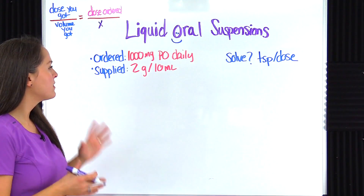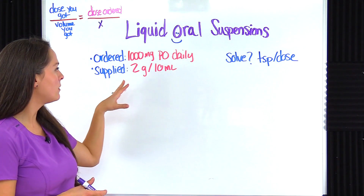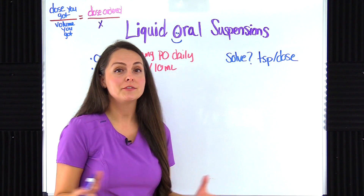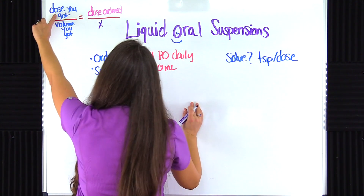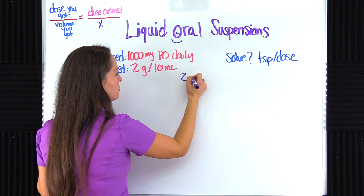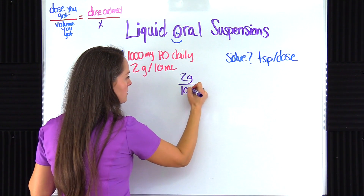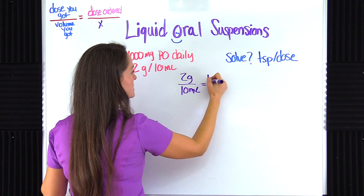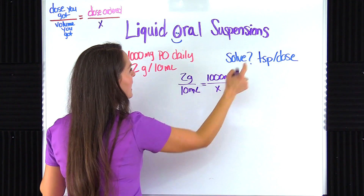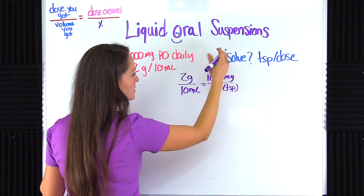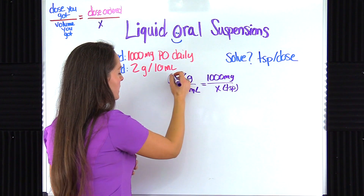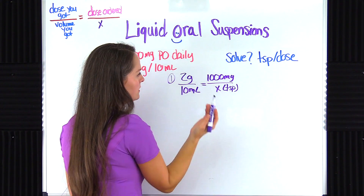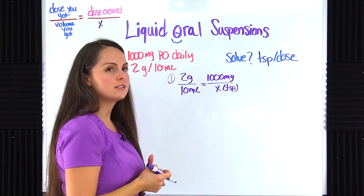Problem two: we're ordered to give 1,000 milligrams by mouth daily, supplied with a bottle that says two grams per 10 mL, and we need to solve for teaspoons per dose. Creating our known ratio: the dose we got is two grams over the volume we got, which is 10 milliliters. This equals the dose ordered — 1,000 milligrams — over x teaspoons. Checking units: grams don't match milligrams, and milliliters don't match teaspoons, so I need to do some converting.